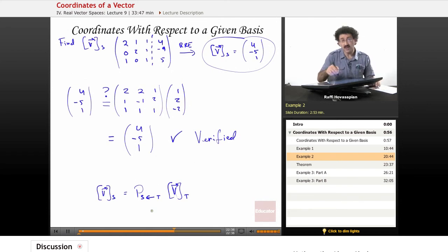And the columns of that transition matrix are the individual basis vectors for the basis t expressed as coordinate vectors with respect to the basis s. That's what this notation tells me.